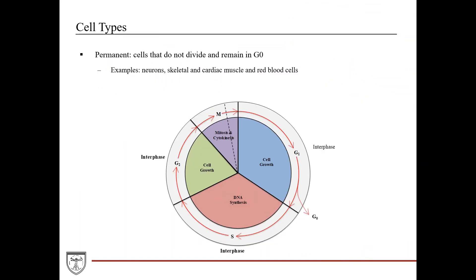Briefly, regarding cell types: permanent cell types enter the G0 phase and never come back into the cell cycle—they're done replicating. Examples include neurons especially in the central nervous system, skeletal and cardiac muscle, and red blood cells.